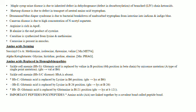Arginine is rich in FOE. Taurine is the end product of cysteine. Carnitine is synthesized from lysine and methionine; carnitine is present in muscle. Succinyl-CoA is formed by methionine, isoleucine, threonine, and valine. Alpha-ketoglutarate mnemonic is PHAG: P for proline, H for histidine, A for alanine, G for glycine.